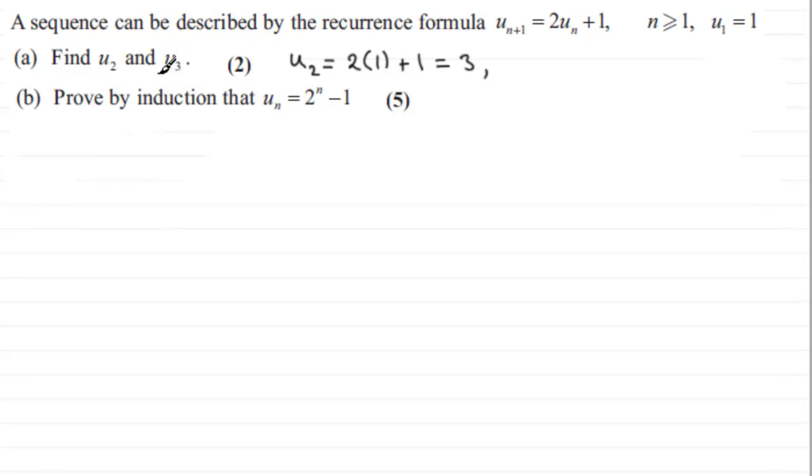For the third term in the sequence, u3, all we do is we let n equal 2. So you've got u3 here. That's going to equal 2u2, so just 2u2, but u2, we just worked it out, was 3. And then we've got the plus 1 here. So 2 times 3 is 6, plus 1 is 7. So the third term in the sequence then is 7.